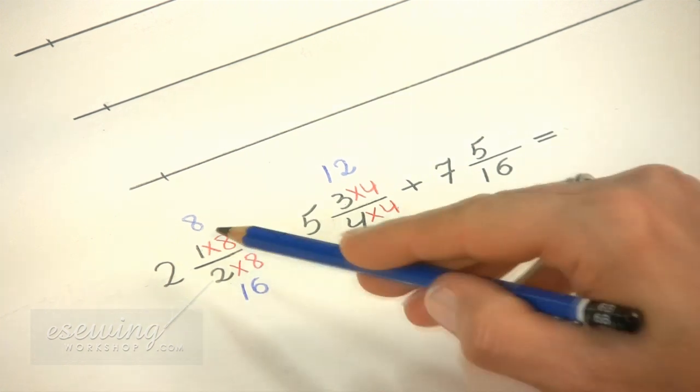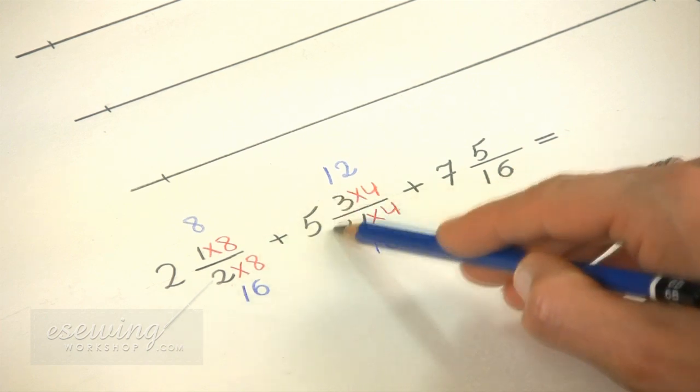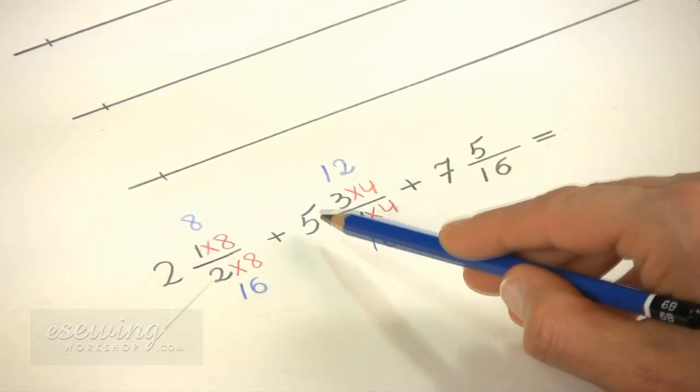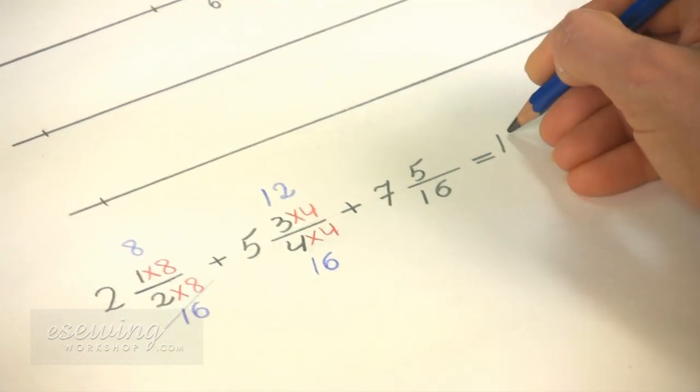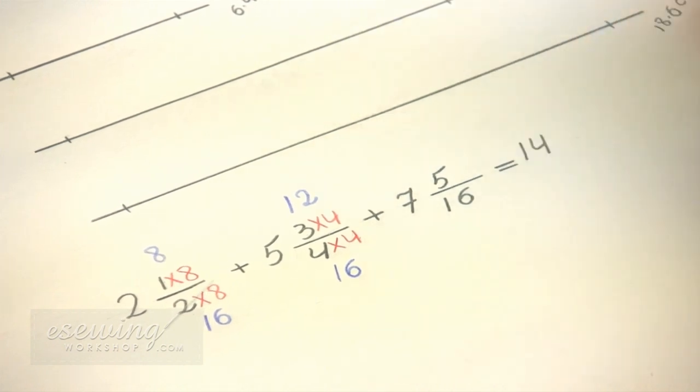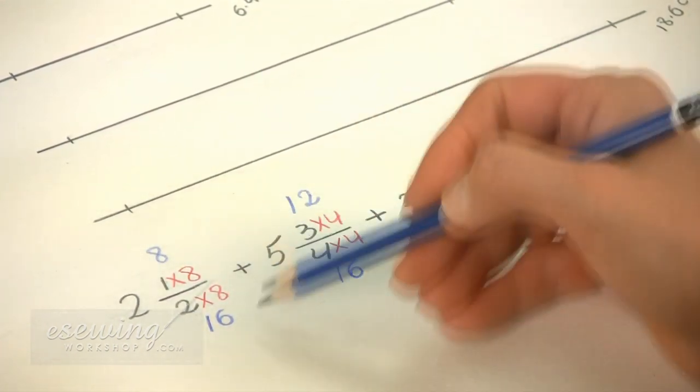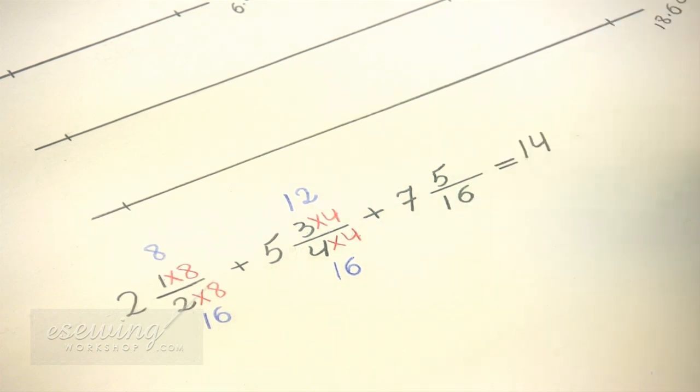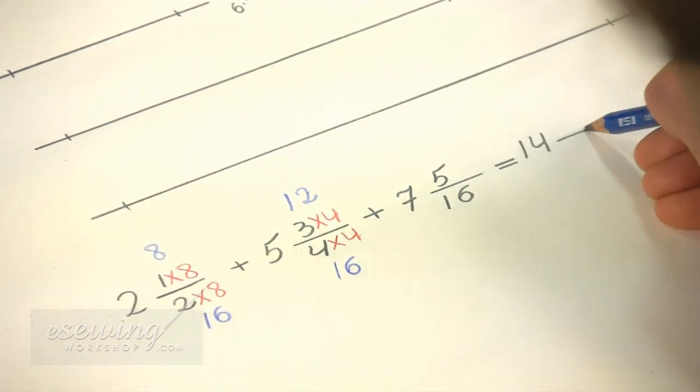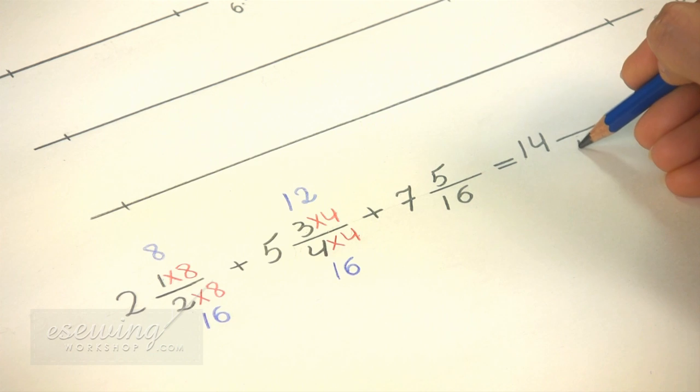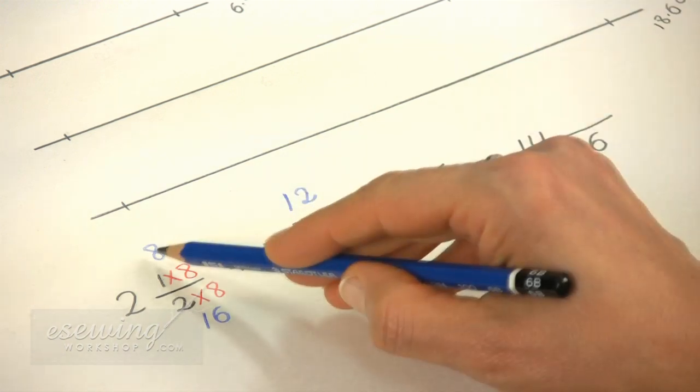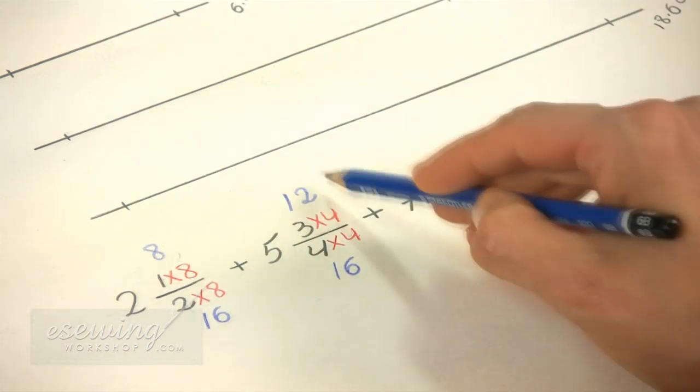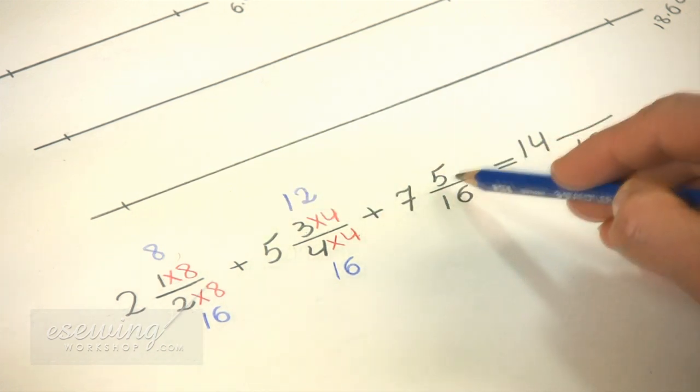Now that all the denominators are the same we can add up our numbers. First we add the whole numbers. 2 plus 5 plus 7 equals 14 inches. Next we add the fractions. The denominator stays the same. It is 16. The numerators will be added together. Adding 8 to 12 and 5 we get 25.